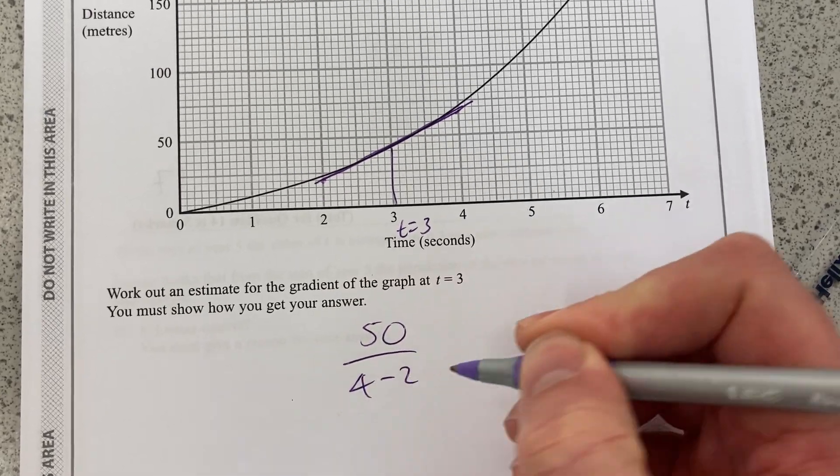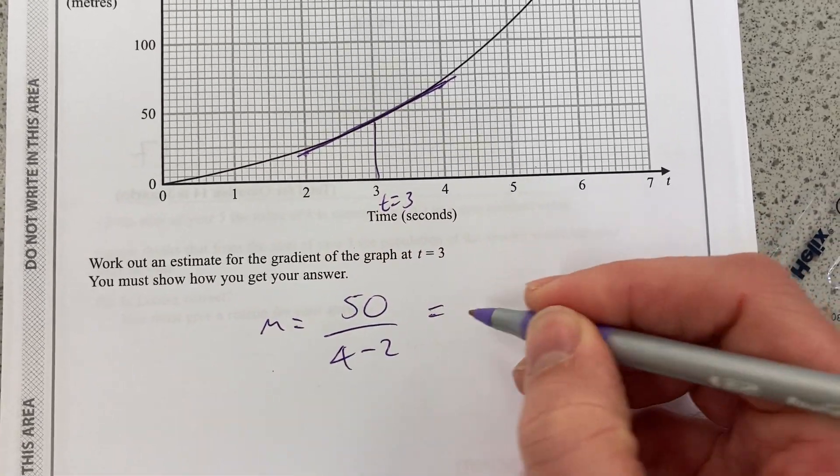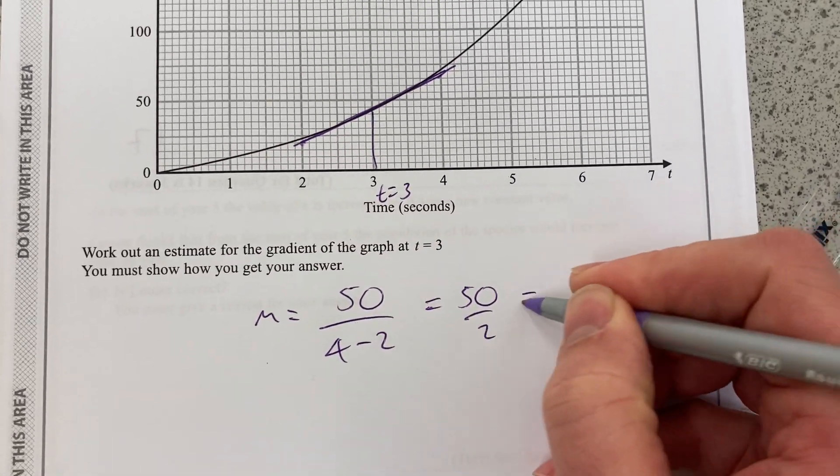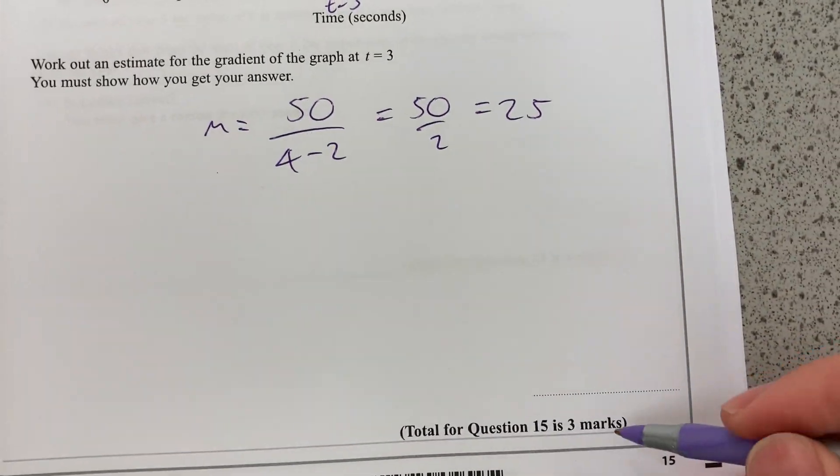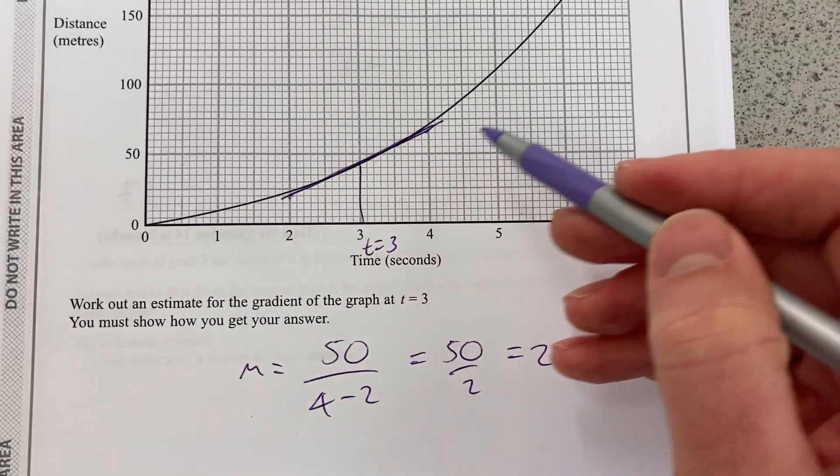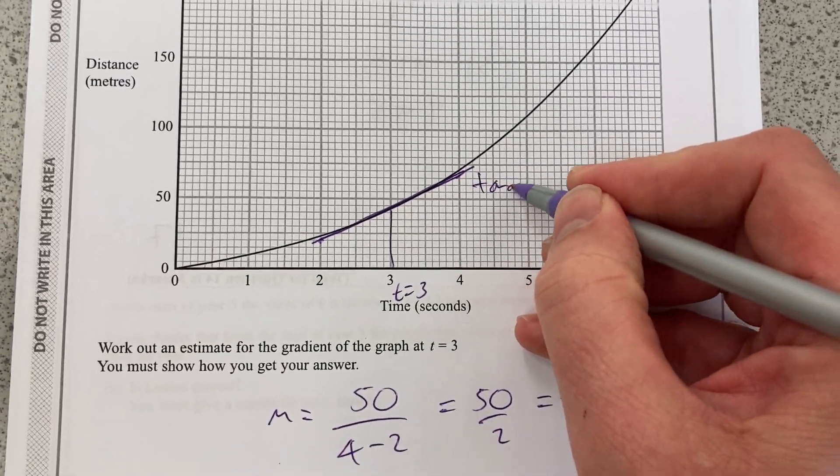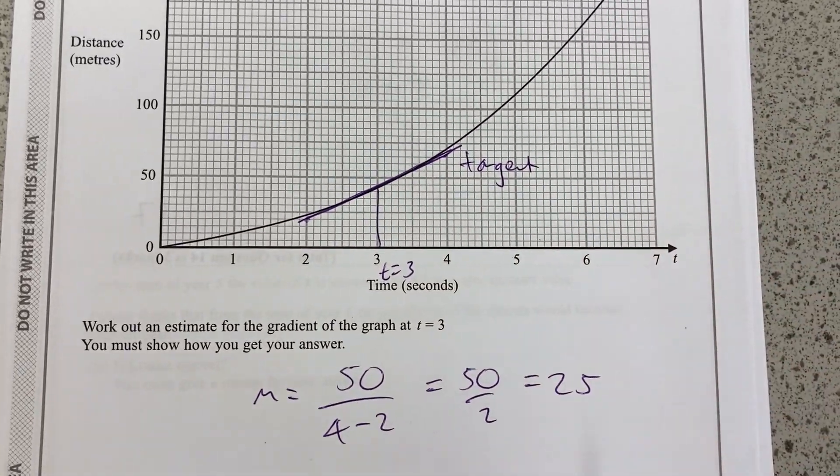There's a change of 4 to 2 in the x direction, and nearly 50 in the y direction. So 50 over 4 minus 2 is 50 over 2 is 25. That's also a three mark question there. Do make sure that you have drawn your tangent, preferably with a ruler and a pencil.